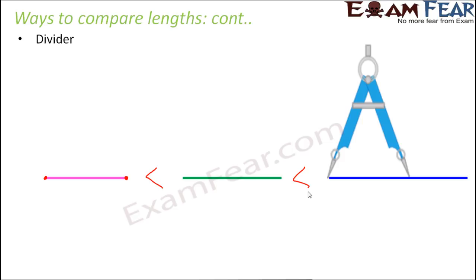Now you might ask that, okay, if I am using divider, even though I get an idea about which line segment is longer and which one is shorter, what if I want to know the exact length of the line segment? For example, in this case we got to know that the blue one is the longest and the pink one is the shortest. But if I want to know the exact length of the pink line segment, then what do I do?